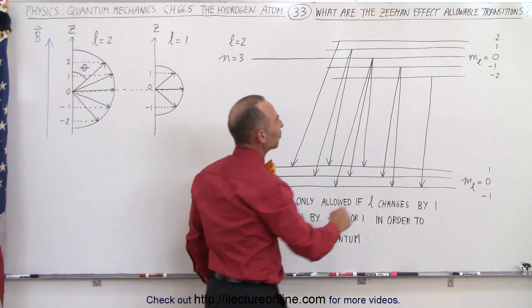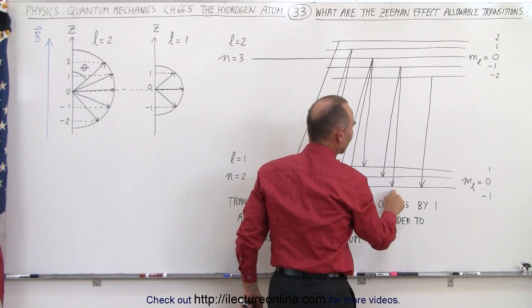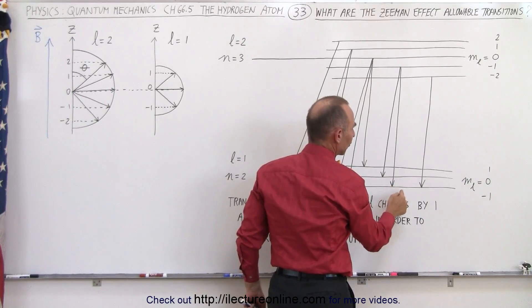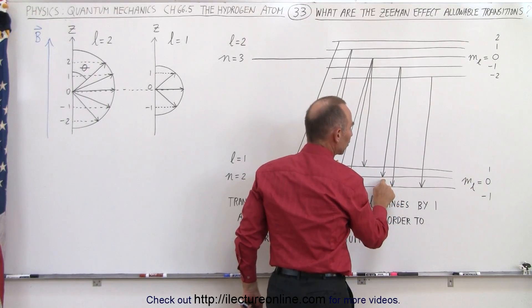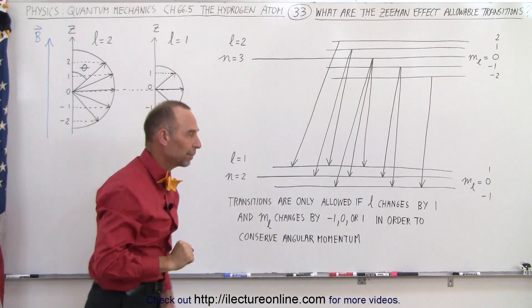Now when we go to the m sub l equals negative 1 level up here, we can only go to two particular levels, 0 and negative 1, because negative 1 is a change of 0, 0 is a change of 1, but m sub l equals 1 would represent a change of 2, and that would not be allowed.